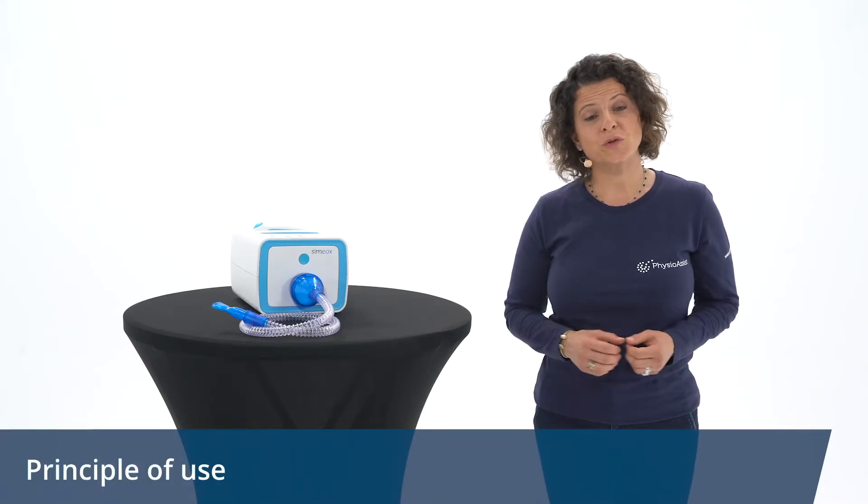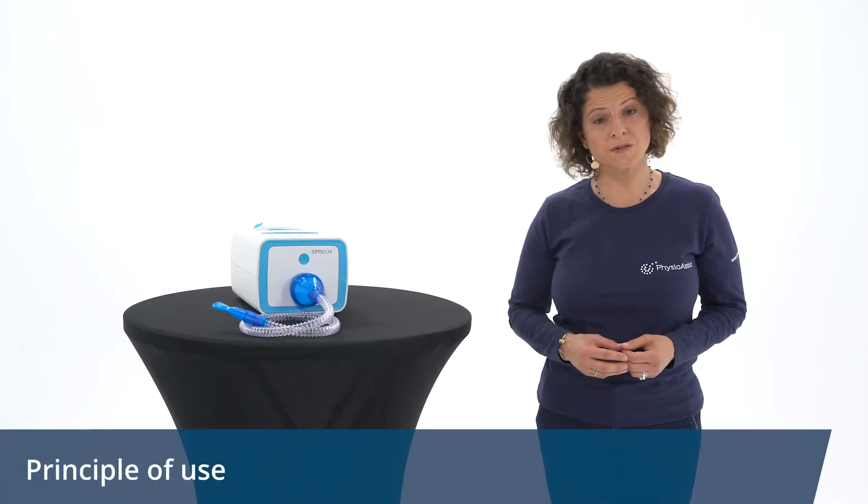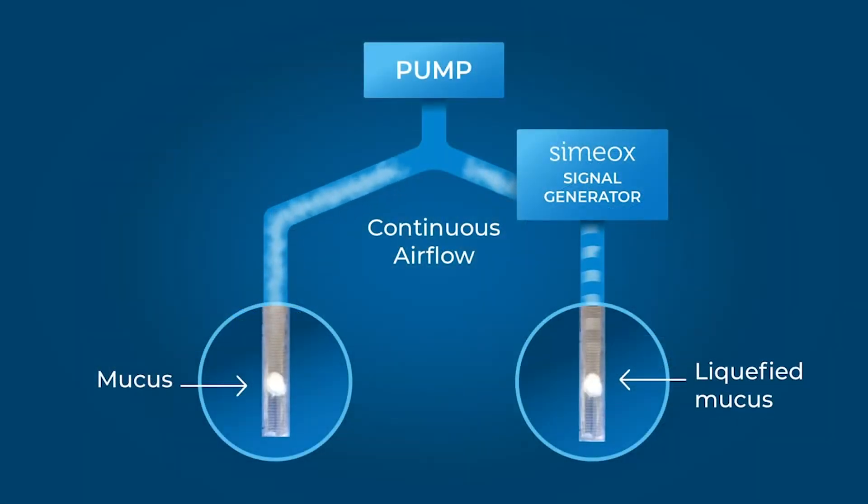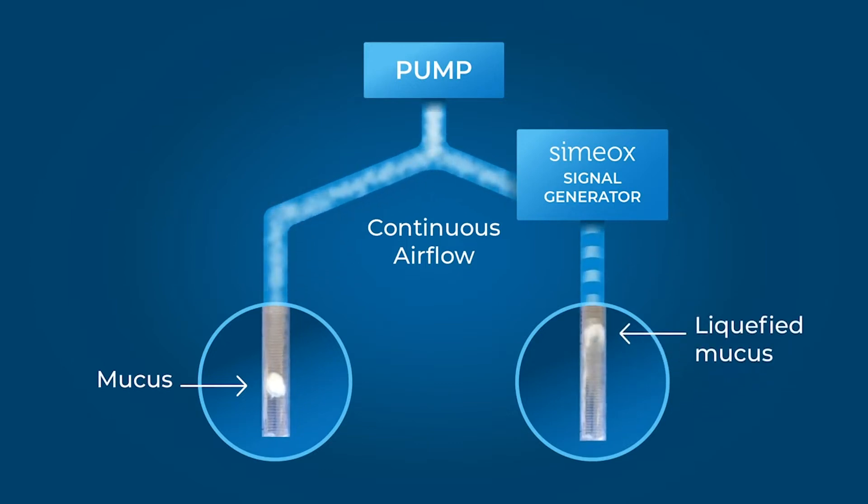This bench test assembly shows the action of the SEMIOX signal in a tube with mucus simulant. On the left, a pump applies a flow of 60 liters per minute. The mucus does not move.